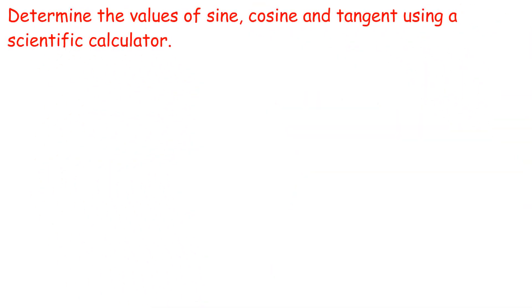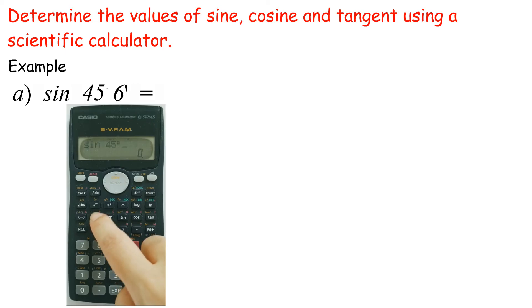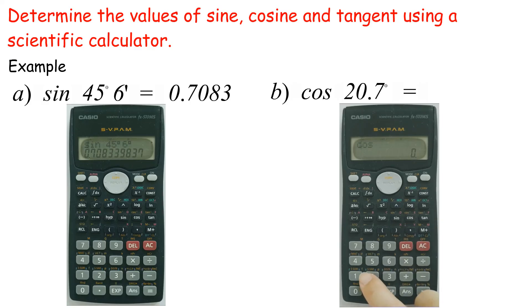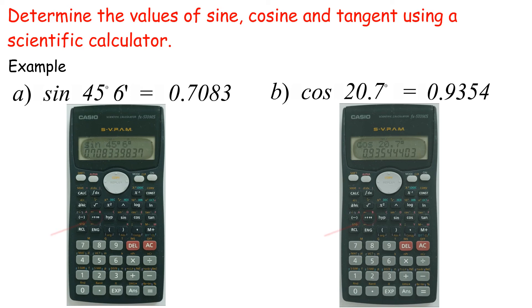Determine the values of sine, cosine and tangent using a scientific calculator. Example A: Sin 45° 6' equals 0.7083. (B) Cos 20.7° equals 0.9354. This button is used only when the question is given in degrees and minutes.